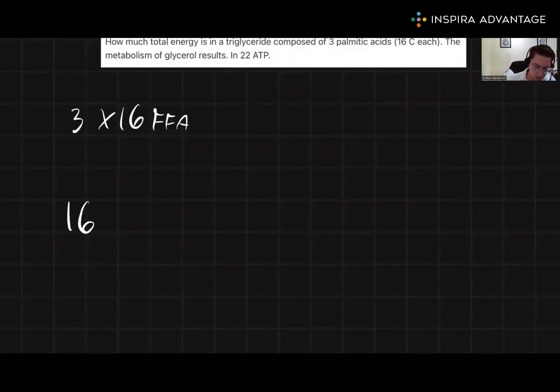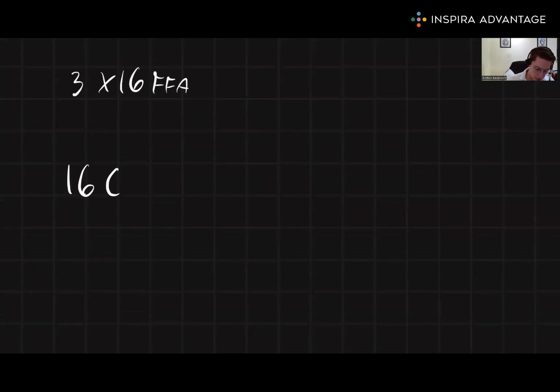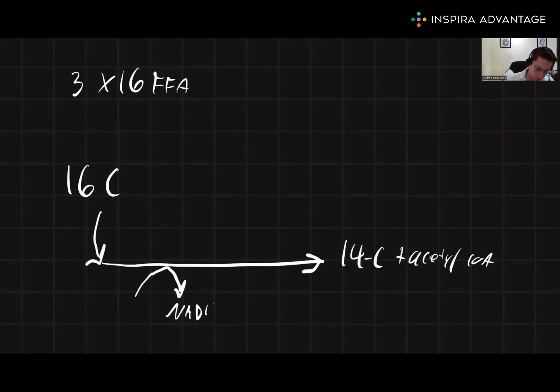So we have a 16 carbon fatty acid. We can draw out our simplified diagram here. I'm going to feed that in. It's going to show our four steps, and we're going to get a 14 carbon plus an acetyl-CoA. Coming out of this, we know we're going to make an NADH. We know we're going to make an FADH2. And we know we're going to make that acetyl-CoA.